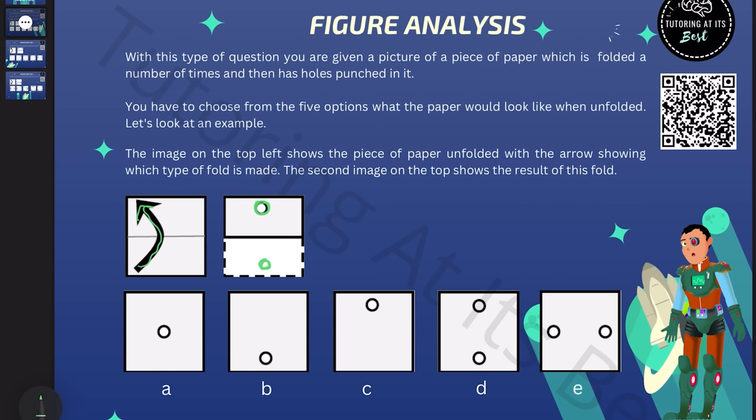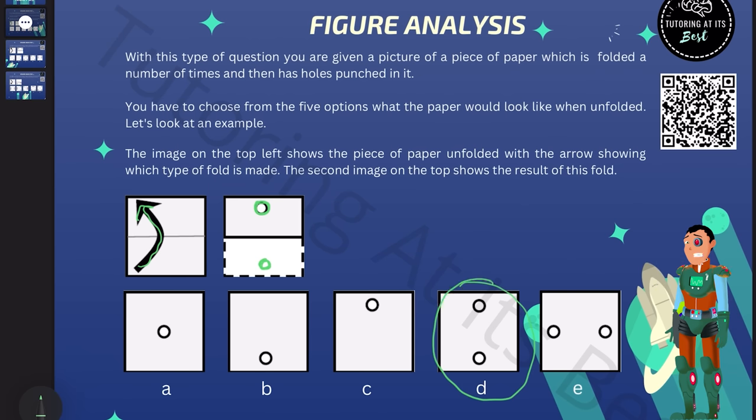So when the paper is unfolded, the top half of the paper has a hole in it, and so does the lower half. So the correct choice is therefore D. Remember, we're not here to rush. We want to understand the logic a little bit better.